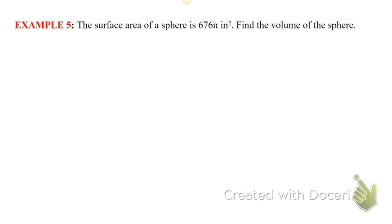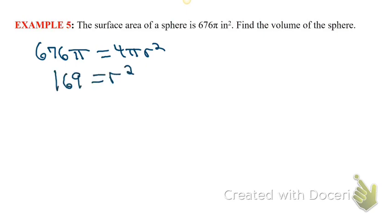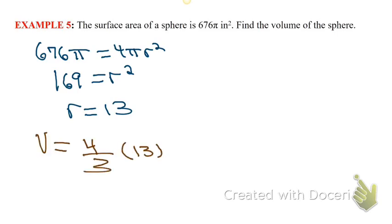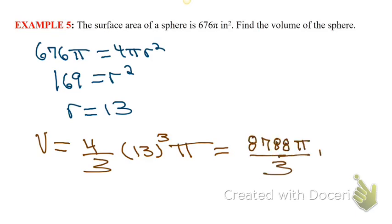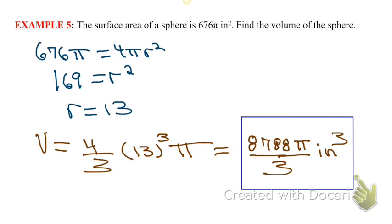The surface area of a sphere is 676 pi inches squared — find the volume. First, we've got to find the radius. Set the surface area equal to 4 pi r squared. Divide out the pi and divide out the 4, and we get r squared is 169, so r is 13. Now go to the volume formula and plug in 13. Cube the 13, multiply by 4, and get 8,788 pi over 3. Remember, it's inches cubed.